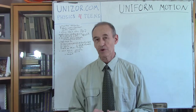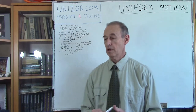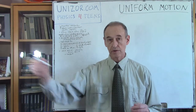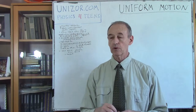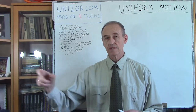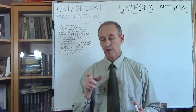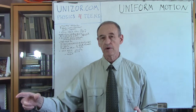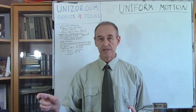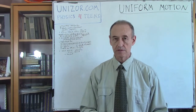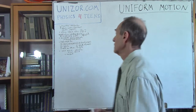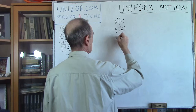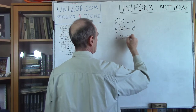Considering you are familiar with differentiation and vectors, we will now talk about uniform motion. What is uniform motion? In simple language, uniform motion is motion along a straight line — the trajectory is supposed to be a straight line in three-dimensional space — and you should cover the same distances during the same time intervals.